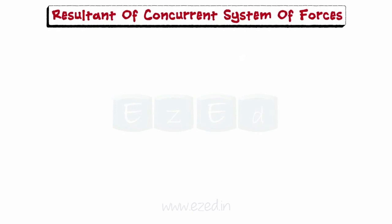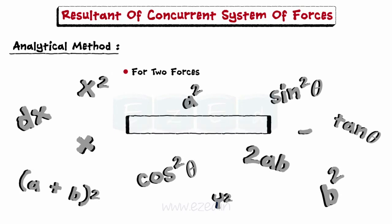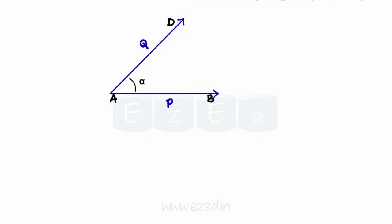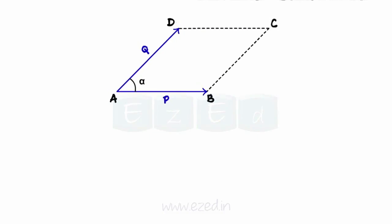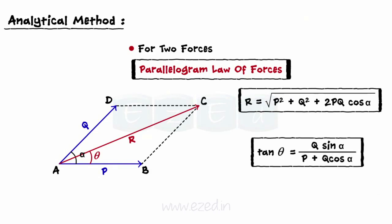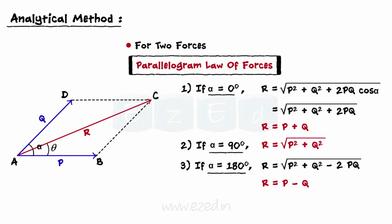Now let's learn how to find the resultant of a concurrent system of forces by analytical method. We will see how to find the resultant by analytical method for two forces acting at a point using the mathematical formula of parallelogram law of forces. Let P and Q be two forces acting at a point A, making an angle alpha with each other. The forces are drawn such that AB and AD represent forces P and Q. Completing the parallelogram ABCD, the diagonal AC represents the resultant R. The resultant can be expressed by a mathematical equation, and the inclination of the resultant is found using the formula where theta is the angle made by resultant R with force P. It may be observed that for different values of inclination alpha between the two forces, the formula also changes.